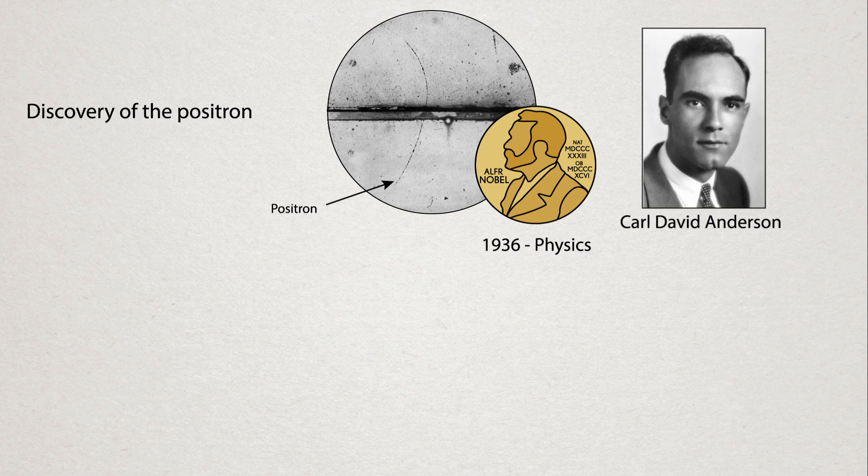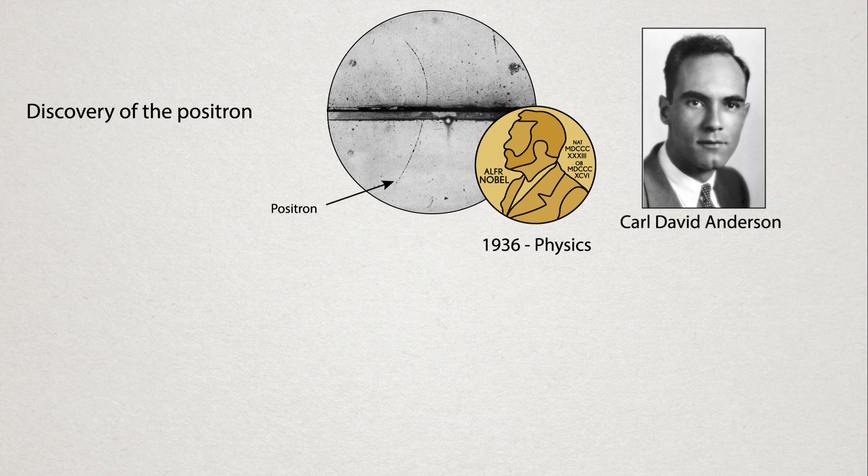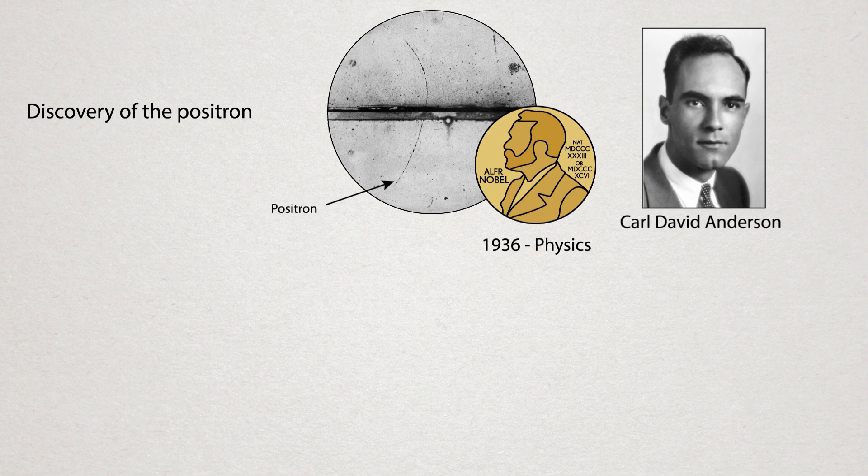This discovery was noticing that particles in a cloud chamber, which is just a particle detector, were for some reason moving in the opposite way in magnetic fields than normal electrons. Thus, an electron with an opposite charge, the positron.